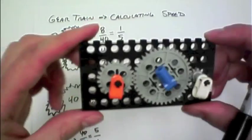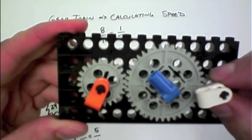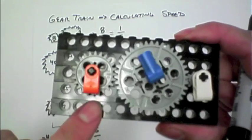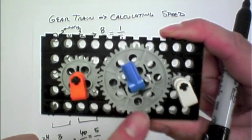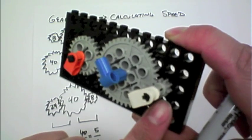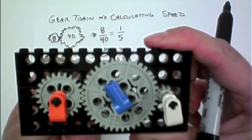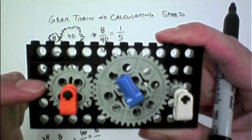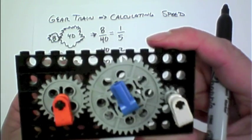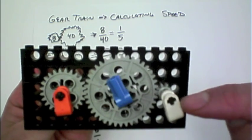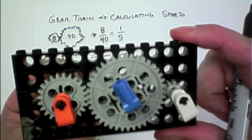I actually have that built right here, this gear train. So we have a 24 on one side, 40 in the middle, and a small 8-tooth gear here on the edge. And so what I will do is I will turn the orange one, the 24-tooth, one full rotation, and we'll count to see how many times the 8 turns, the 8-tooth gear turns.